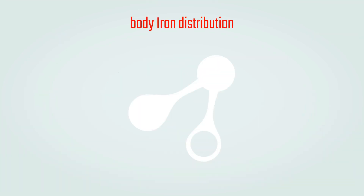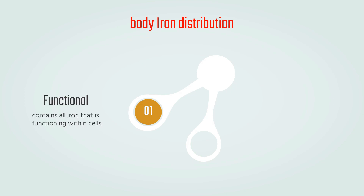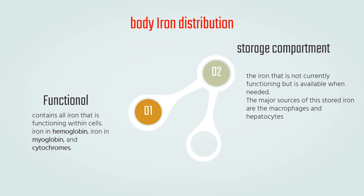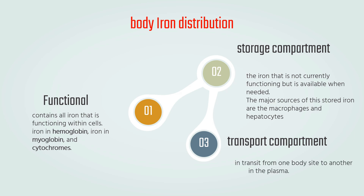Iron is distributed in three compartments. First, the functional compartment contains all iron that is functioning within cells, including the iron in hemoglobin, myoglobin, and cytochromes. Second, the storage compartment holds iron that is not currently functioning but is available when needed; the major sources are macrophages and hepatocytes, though every cell except mature red blood cells stores some iron. Third, the transport compartment is iron in transit from one body site to another in the plasma.